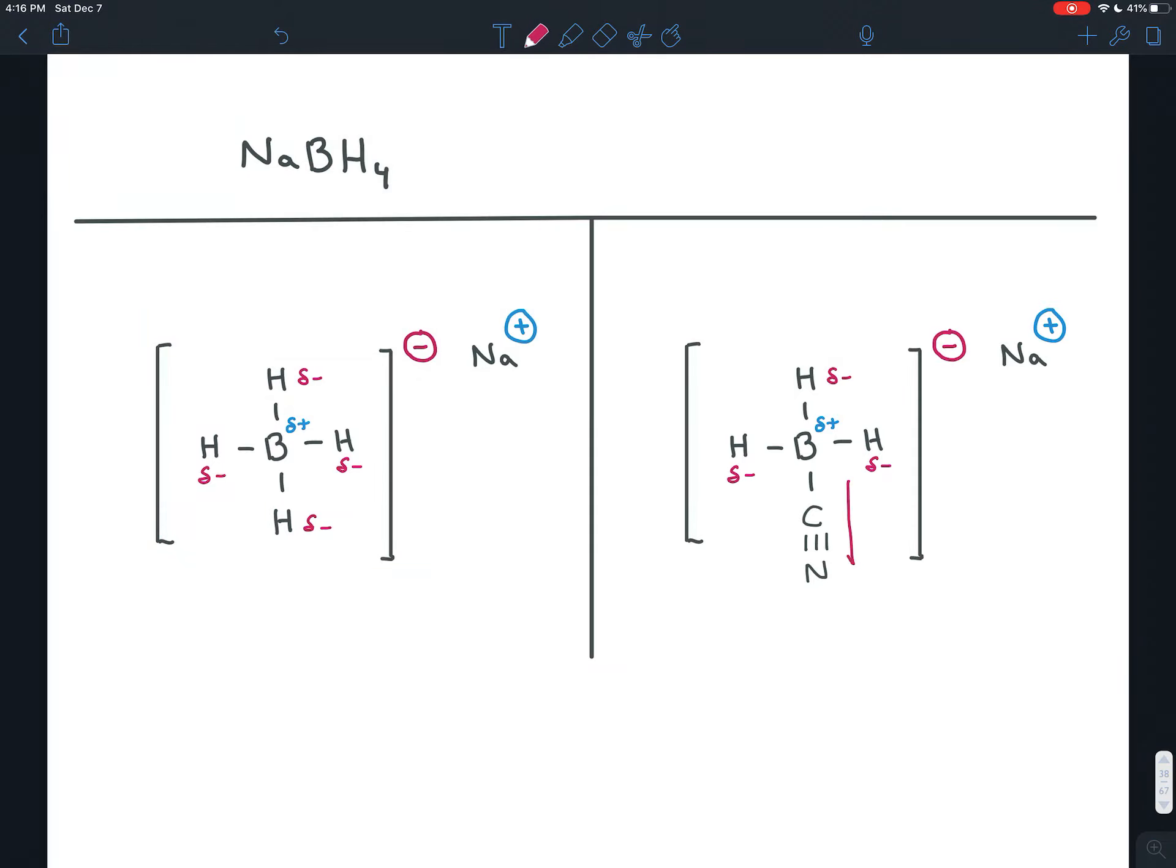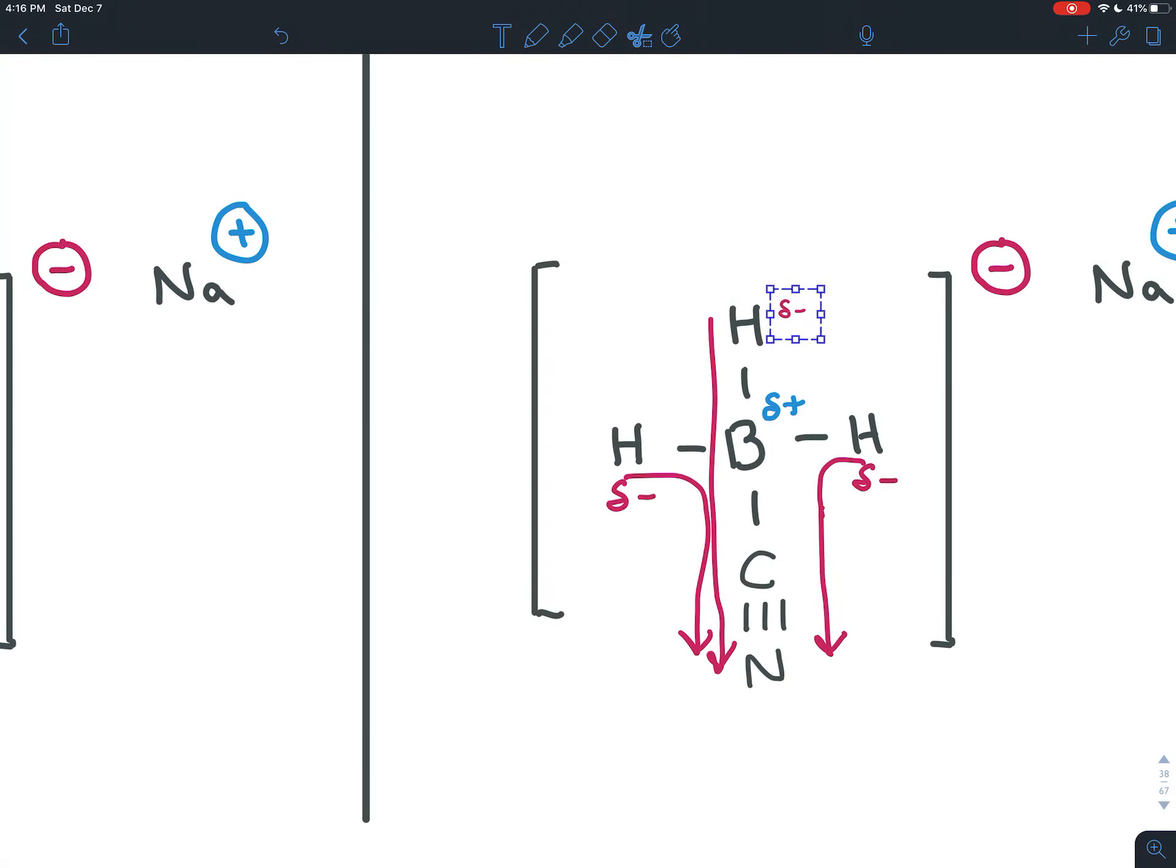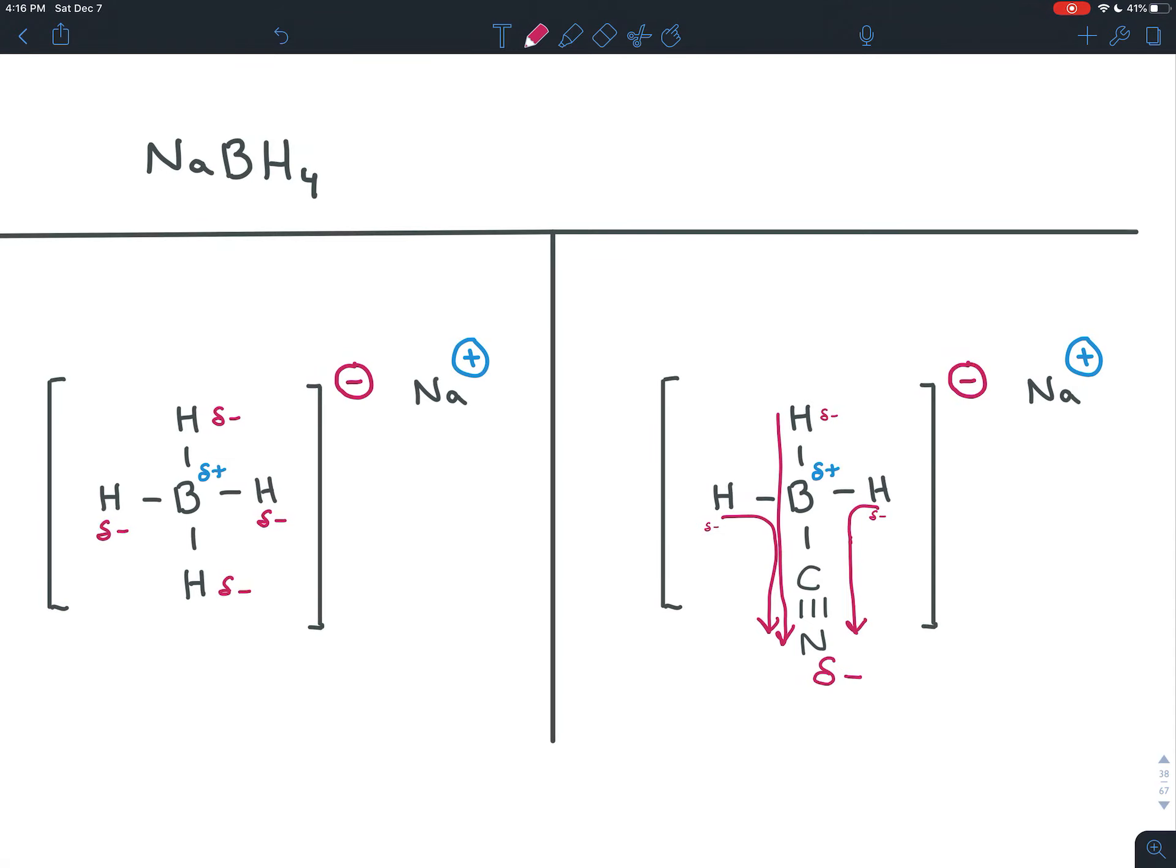That pulls electron density toward itself, this electronegative nitrogen here. And so it doesn't just pull electron density from the boron, but even across other atoms. So the electron density that was on the hydrogens ends up going to the nitrogen here. And the charge on the hydrogens becomes smaller, because the electron density that was creating that charge is moving onto the nitrogen. So the nitrogen then becomes more negative. And so you could see that this turns these hydrogens into weaker nucleophiles. They don't have as strong of a negative charge.